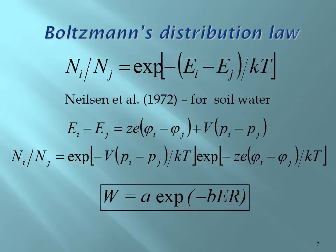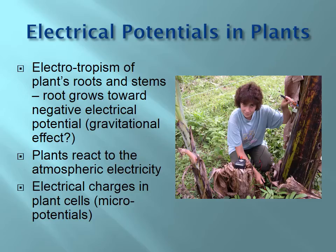Nelson in 1972 adapted those relationships for soil water. Following through the derivation, we can see that soil water content is exponentially related with electrical resistivity, and this applies to other soil properties as well. In plants, there is also a reaction to atmospheric electricity — electrotropism of plant roots has been shown, meaning root growth occurs toward negative electrical potential, and this is unrelated to gravitational effects, as was proven by NASA in experiments growing plants in outer space.